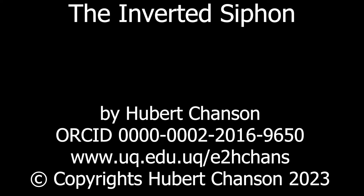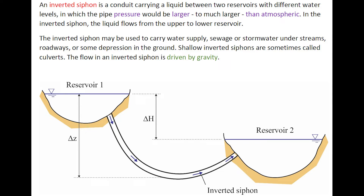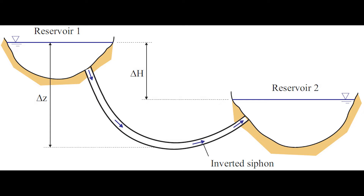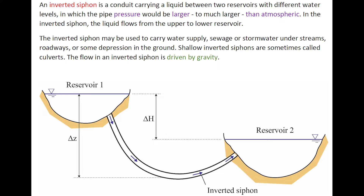An inverted siphon is a conduit carrying a liquid between two reservoirs with different water levels, in which the pipe pressure will be larger to much larger than atmospheric. In the inverted siphon, the liquid flows from the upper to the lower reservoir. The inverted siphon may be used to carry water supplies, sewage, or stormwater under streams, roadways, or some depression in the ground. Shallow inverted siphons are sometimes called culverts.